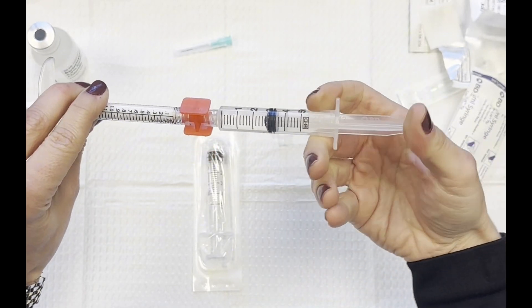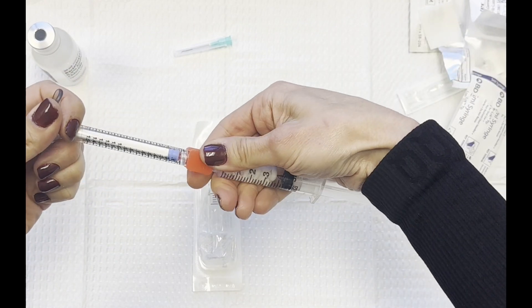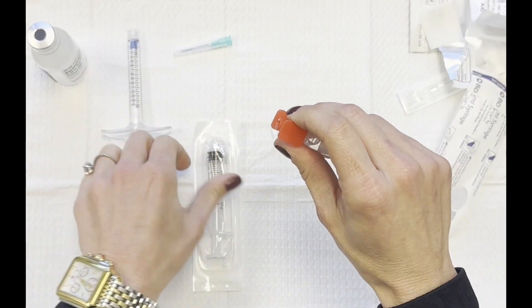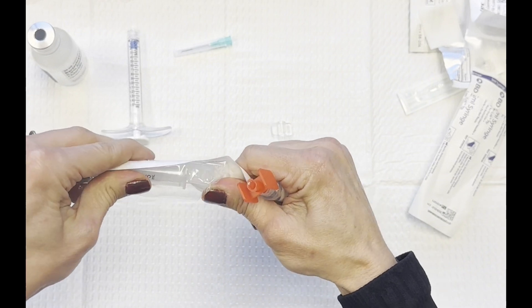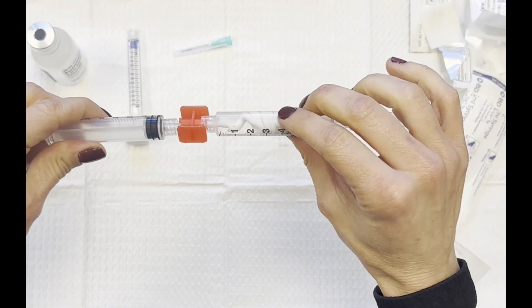And then push that Radiesse into my 5cc syringe. And you see, that's why I used a 5cc, so I have plenty of room to blend the product. Now I'm going to take my other 5cc syringe and connect the two together.